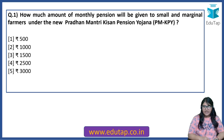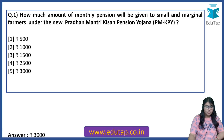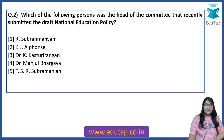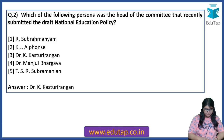How much monthly pension will be given to small and marginal farmers under the new Pradhan Mantri Kisan Pension Yojana? The answer is 3,000 rupees. Which of the following persons was the head of the committee that recently submitted the draft National Education Policy? Whenever there are committees formed, you need to know the head. The answer is Dr. K. Kasturirangan.